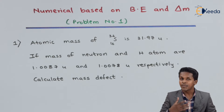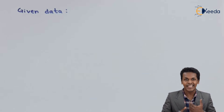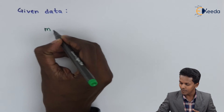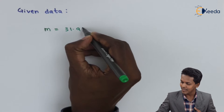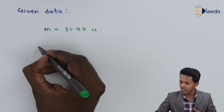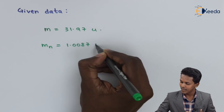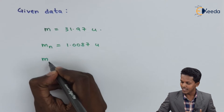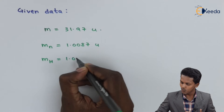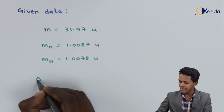Let us understand the formula, but before that let us extract the data from this question so that it is simple to solve this numerical. The atomic mass of the nucleus for sulfur is M = 31.97 unified mass units. The mass of the neutron is 1.0087 units, the mass of hydrogen is 1.0078 units, and we have to calculate delta M.